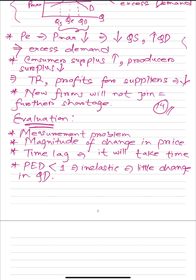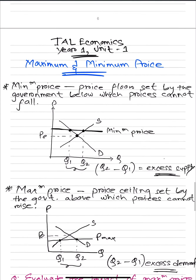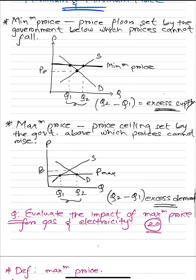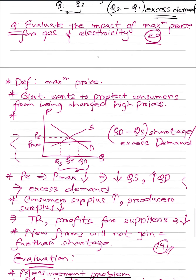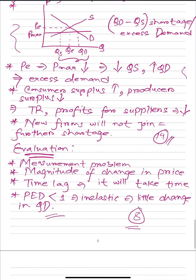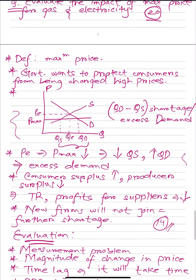So those are the four evaluation points, which will gain you eight marks, and that is basically it. This is a fairly easy topic. You'll do the exact same thing for a question that asks for the effects of minimum price — just the exact opposite. Keep practicing, and we'll see you next time.